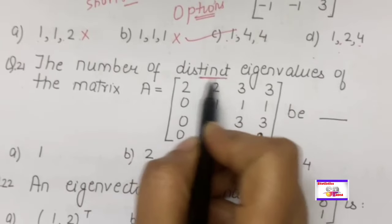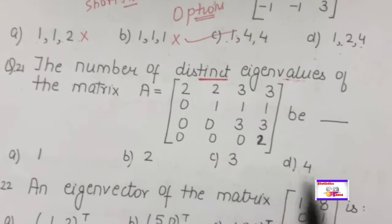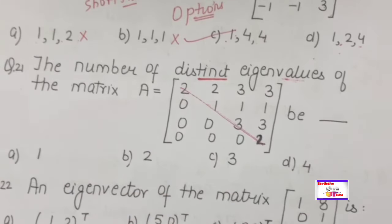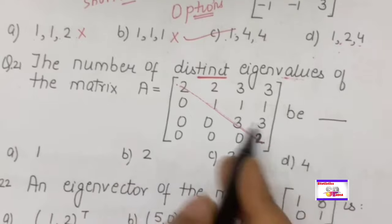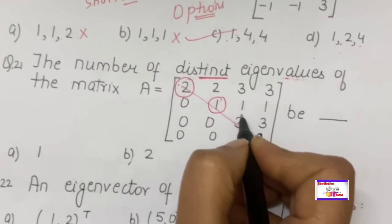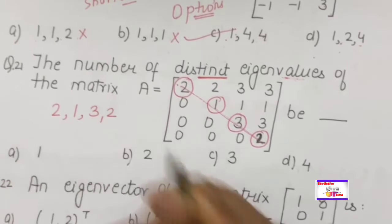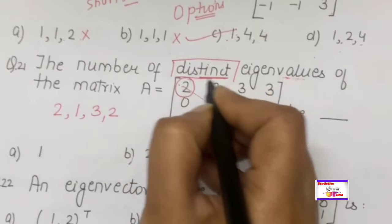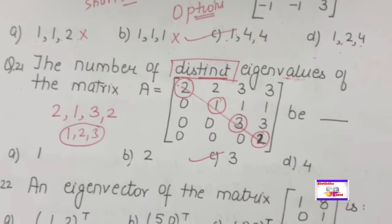Find the number of distinct eigenvalues of the given 4×4 upper triangular matrix. For an upper triangular matrix, the diagonal elements are the eigenvalues. The diagonal elements are 2, 1, 3, 2. The four eigenvalues are 2, 1, 3, 2, but distinct means no repetition: {1, 2, 3}. So the number of distinct eigenvalues is 3.